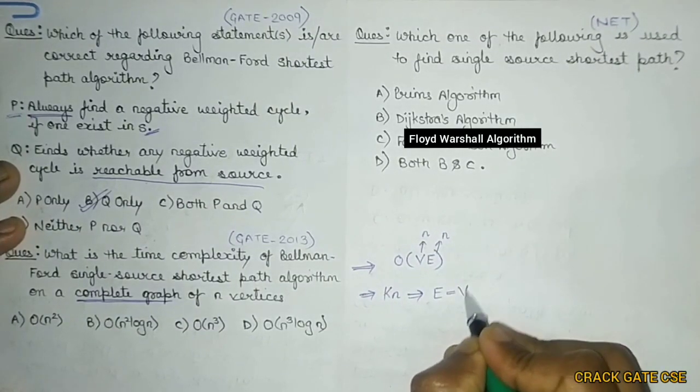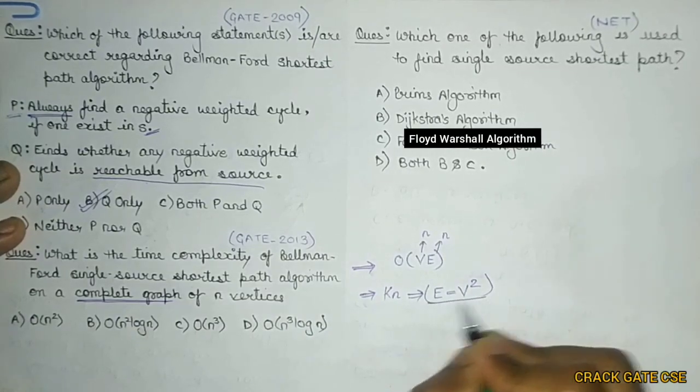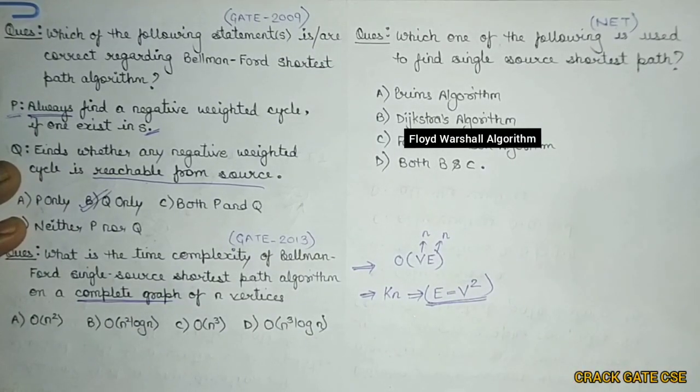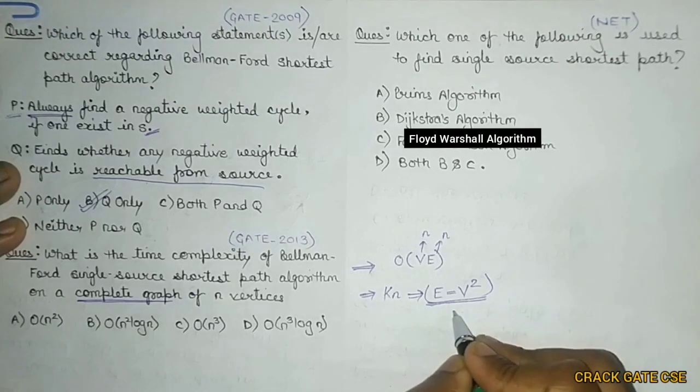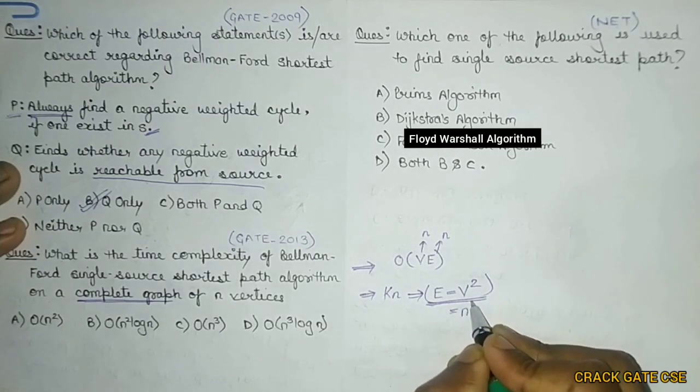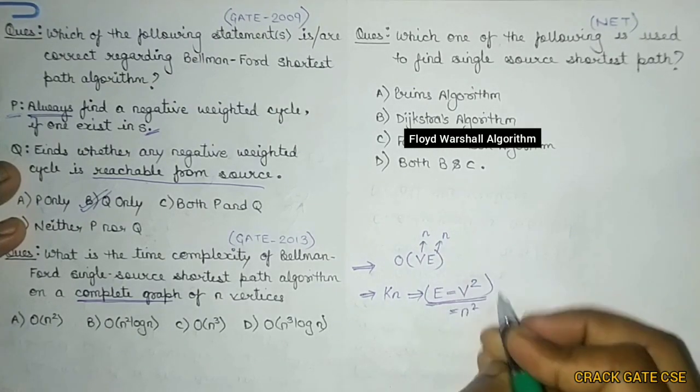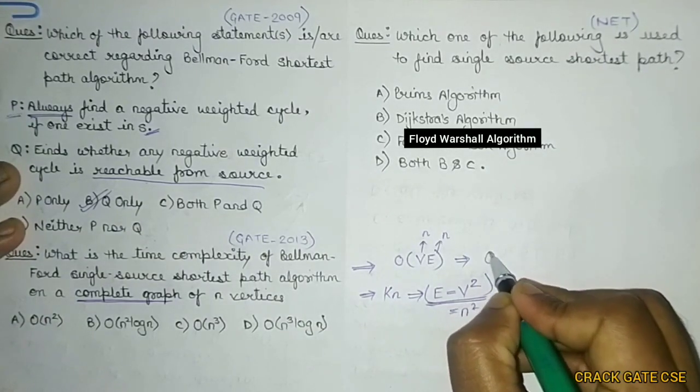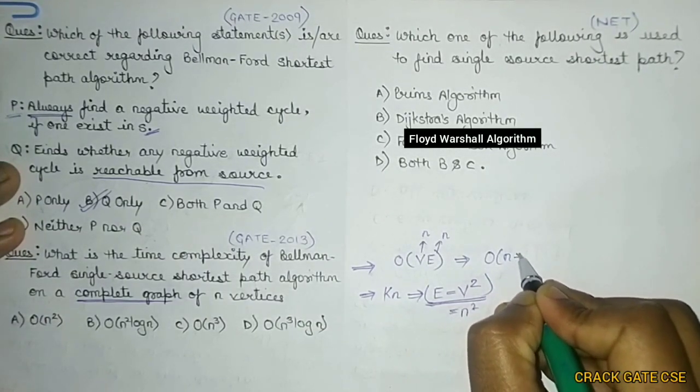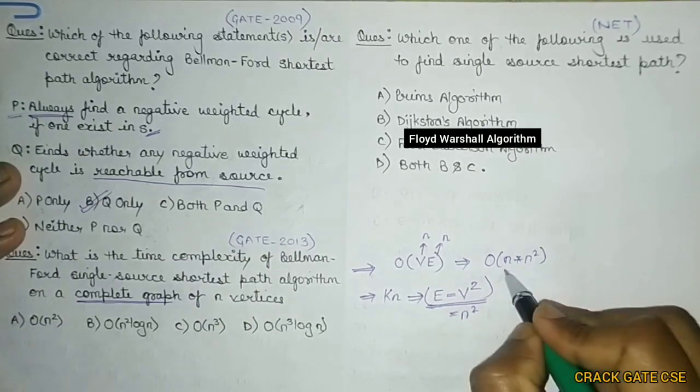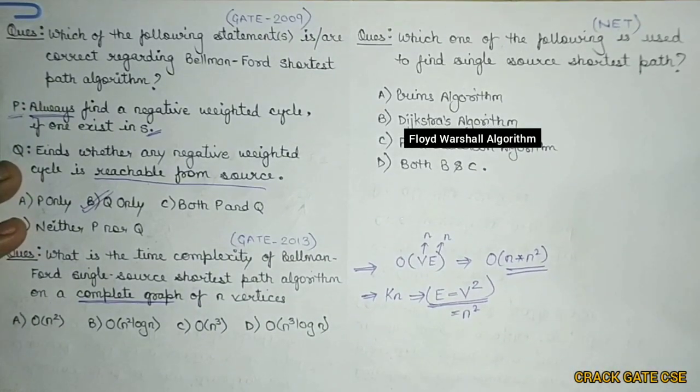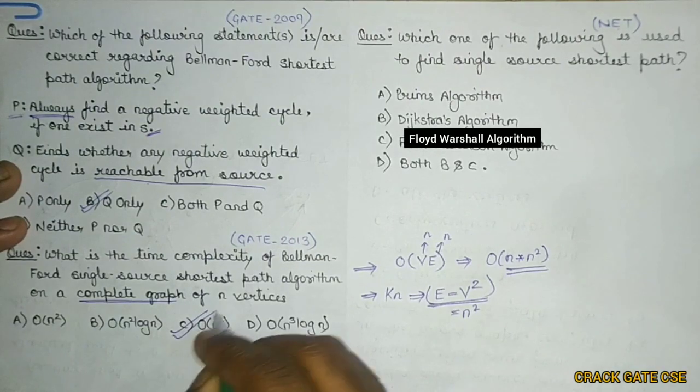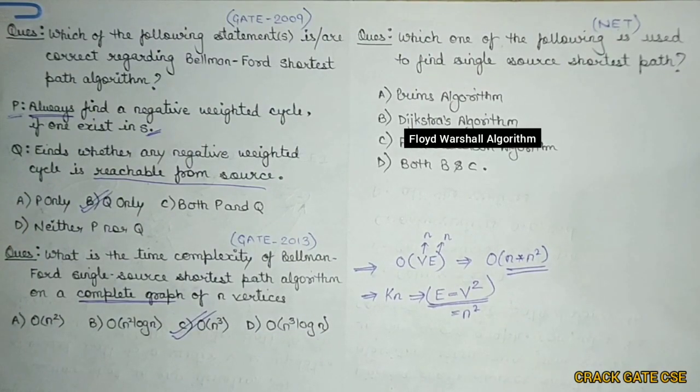But in complete graph, edges are equal to V squared. I already told you in the previous video. If this is the case, then I can write it as N square because I am having N vertices. Now if I put this N square in this particular statement, I will be getting order of N into N square. That means this will be nothing but order of N cube. So this is the right answer for this particular question.